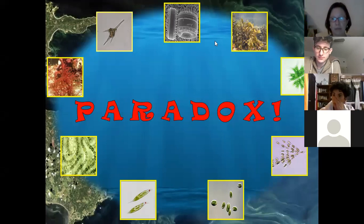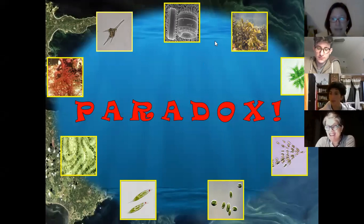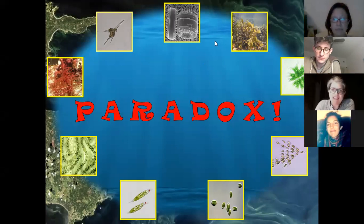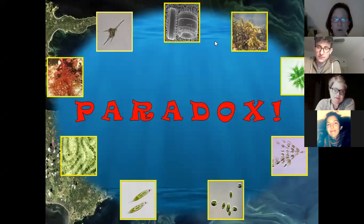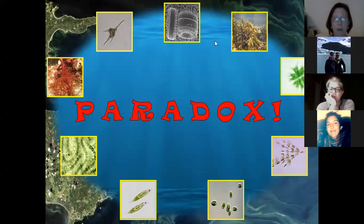Me parece muy interesante esto de la paradoja, porque también pasa con los granitos de arena: vos los ves todo igual y cuando los ves a un microscopio hay una diversidad terrible, que están en el mismo lugar. En las clases anteriores nosotros hemos aprendido a apreciar la heterogeneidad del ambiente acuático.